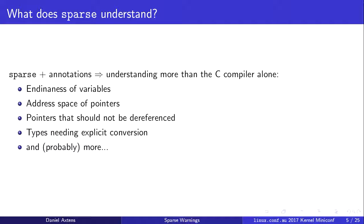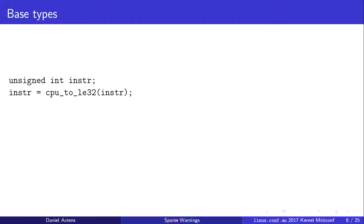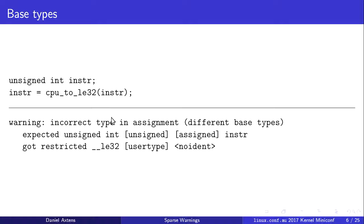Now we're going to look at actual output from SPARS and some slightly truncated kernel code that causes the warnings. SPARS warnings are not necessarily easy to parse, so we're going to talk about what SPARS says and what it actually means. Here's an example using type annotations: we've defined an unsigned int called instr and we're asking the kernel to convert CPU to little-endian 32-bit instr. If we run SPARS on that, we get this warning: 'incorrect type in assignment, different base types, expected unsigned int, got restricted __le32'.